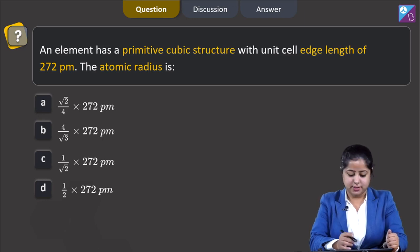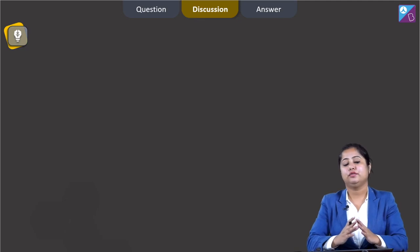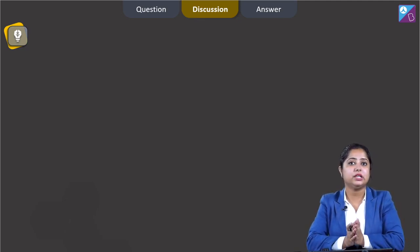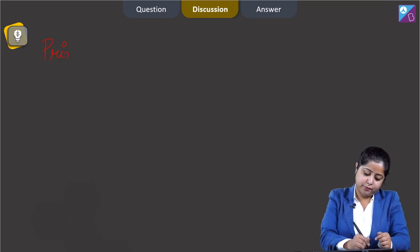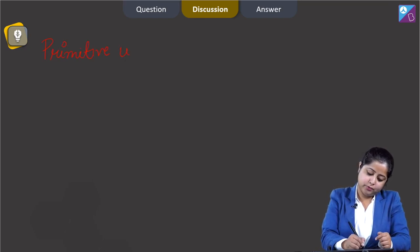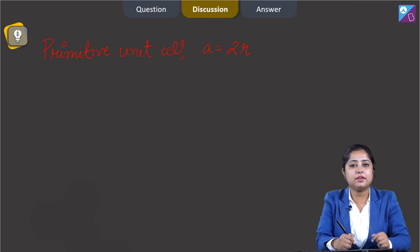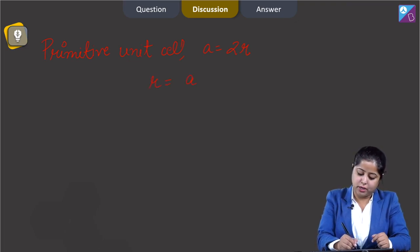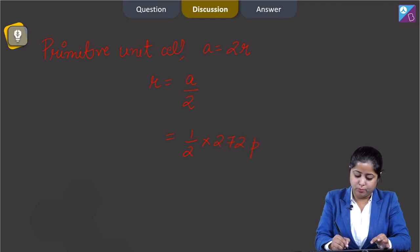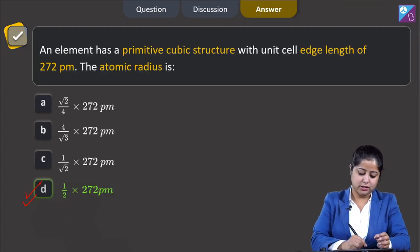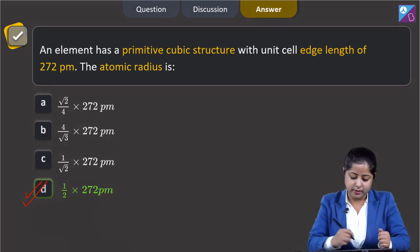An element has a primitive cubic structure with unit cell edge length of 272 picometer. The atomic radius is? For this question, first we need to know the relation between edge length A and radius of atom R for primitive unit cells. For primitive unit cell, A equals 2R, so R equals A upon 2. We are given the value of A which is 272 picometer, so R is 136 picometer. The correct answer is option D.